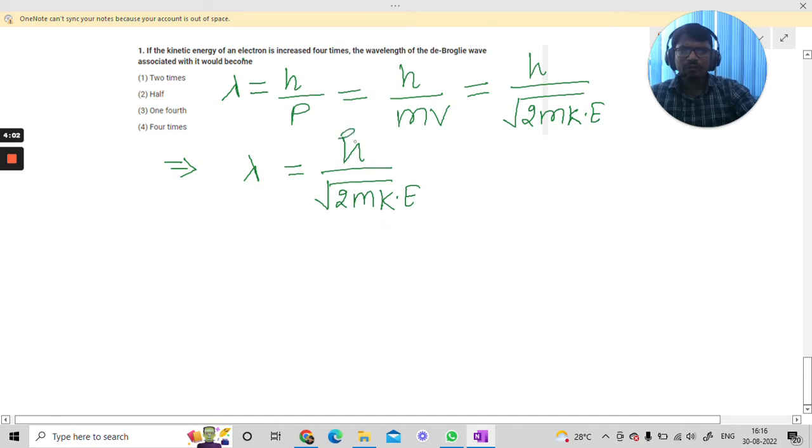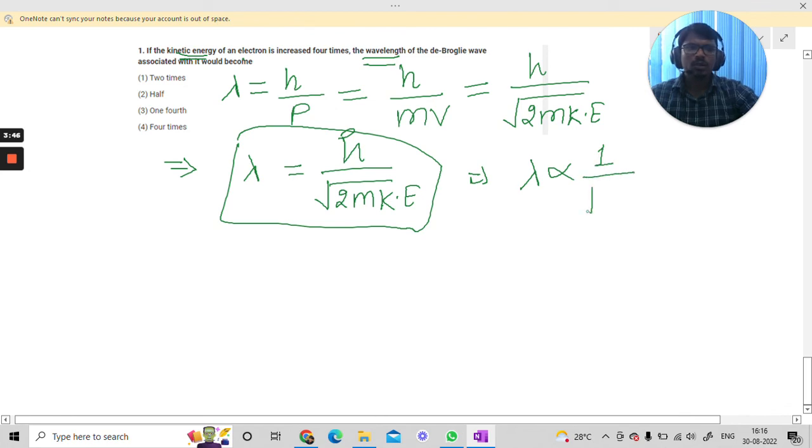So from here we can see the relation: lambda equals h divided by the square root of 2m times kinetic energy. And what we need is the relation between de Broglie wavelength and the kinetic energy, and that we are having here.